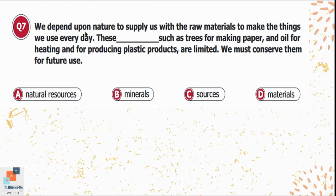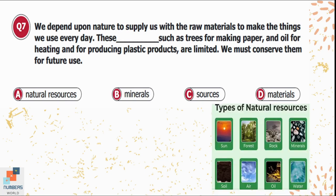Question 7: We depend upon nature to supply us with raw materials to make the things we use every day. These — such as trees for making paper and oil for heating and producing plastic products — are limited and must be conserved for future use. Options: A) natural resources, B) minerals, C) sources, D) materials. Trees, oil, rocks, minerals, and water are all examples of natural resources, so option A is correct.